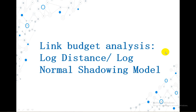Basically, link budget design is something that we use for calculating the total loss that has occurred in a system. That is, we add the different gains that the system has — may it be the antenna gain of the transmitter or the receiver and other additional gains — and subtract the losses that have occurred at the transmitter side, receiver side, or due to the atmosphere. So adding the gains and subtracting the losses gives us the link budget analysis. Now the log distance model or log normal shadowing model is again a link budget analysis model that helps us in finding the loss in a particular system.